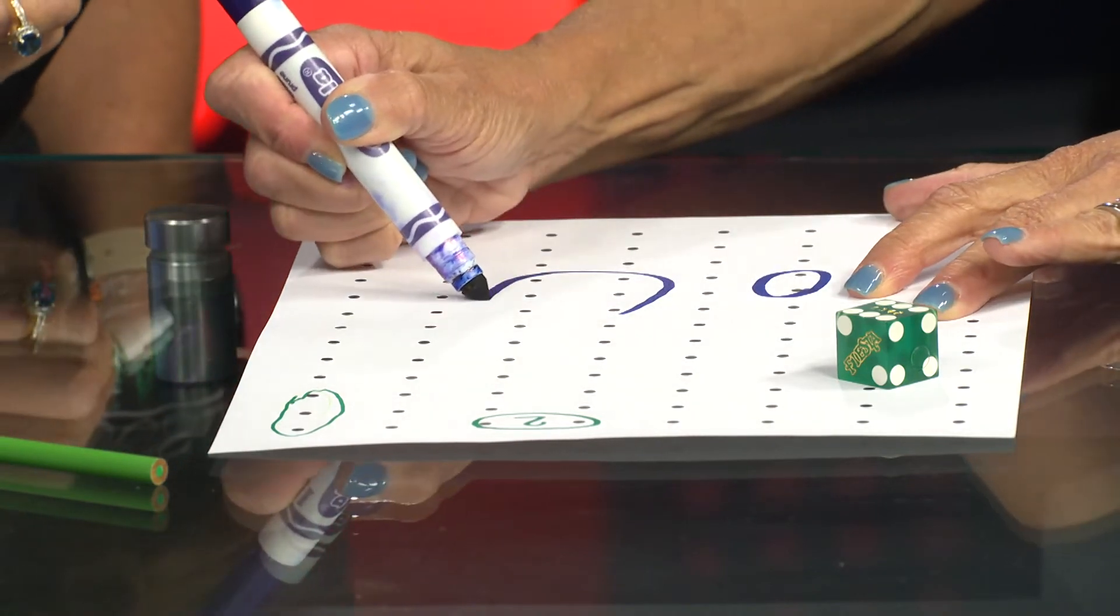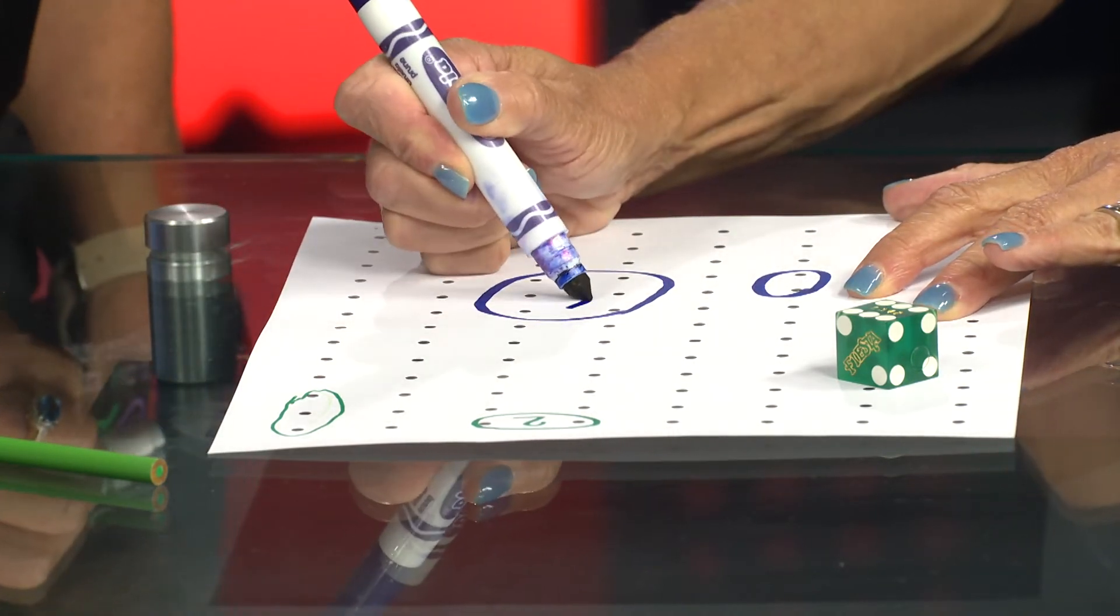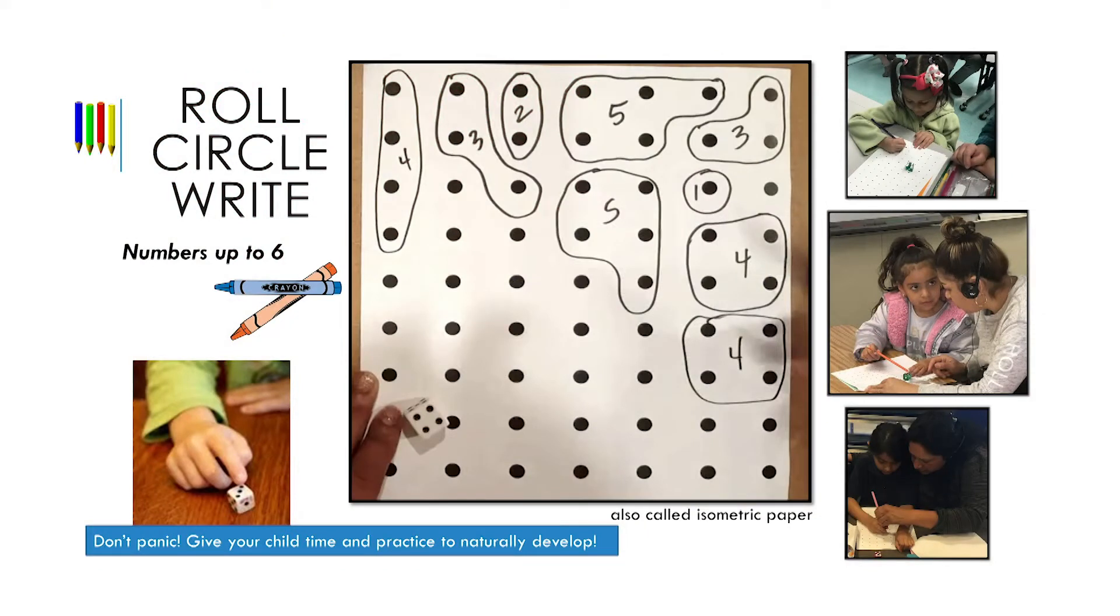To extend this activity when your child is ready, you may write the corresponding numeral that matches the amount they circled to their circle on the paper, as you see in the slide. Feel free to pause the video here and play this game together for a few more minutes before moving on.